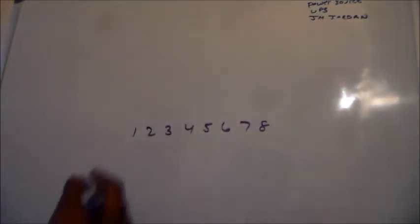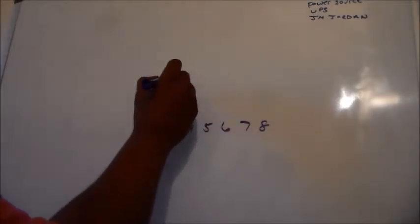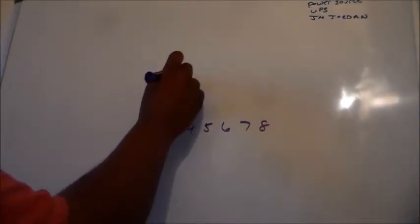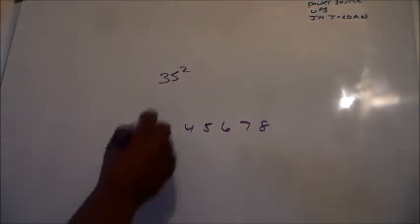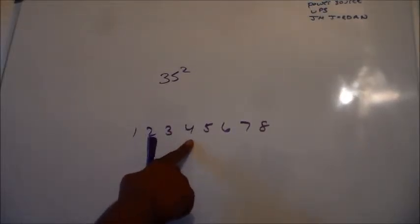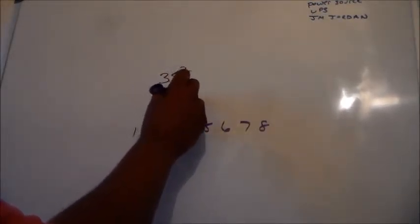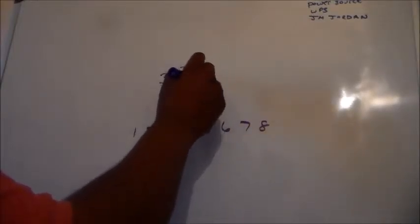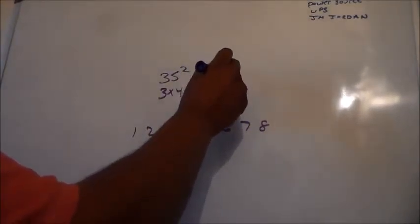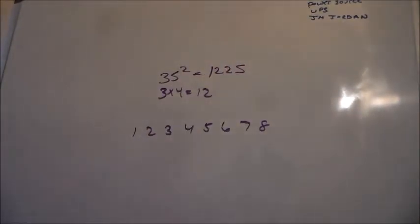I lost my eraser, I misplaced it. So, let's say we're going to square 35 squared. It would be 3. The next number behind 3 is 4, so 3 times 4 equals 12. So, 1,225 is the answer.